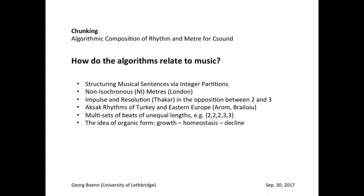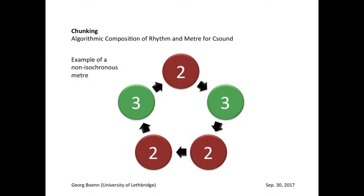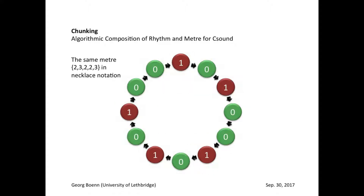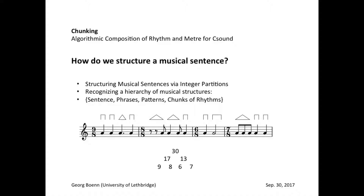One can find many asymmetric groupings in twos and threes in the rhythmic patterns of Turkey and Eastern Europe. Here is an example of a non-isochronous meter. Note the circular structure and note that we can step in at any point in order to have variations. A sentence can be regarded as a concatenation of such patterns. This sentence is built on a hierarchy of elements: the sentence is subdivided into phrases, which are further subdivided into patterns of rhythms, and finally into chunks of rhythms.